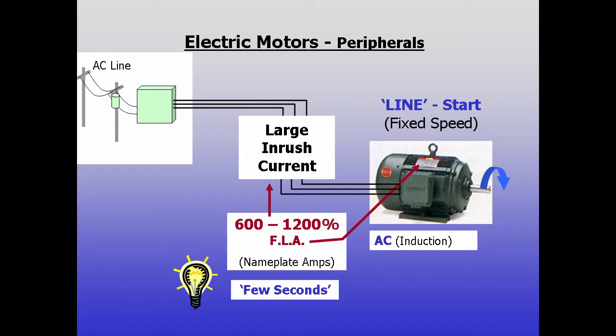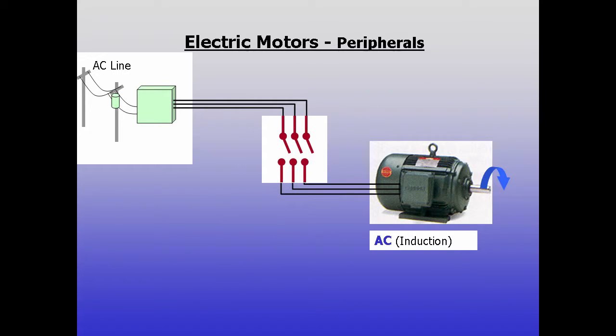Most of us have seen how lights dim when AC motors start somewhere in a building. Whatever turns the power on and off must be able to handle the high amperage without overheating.